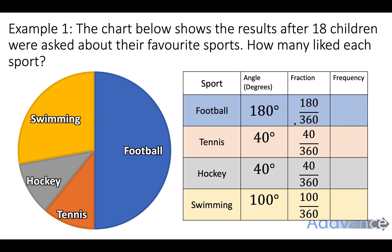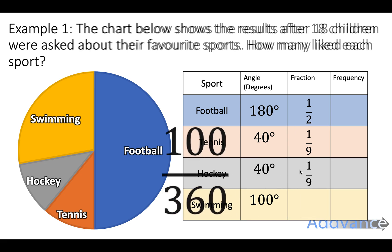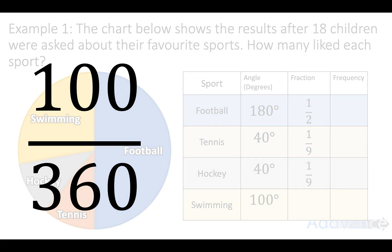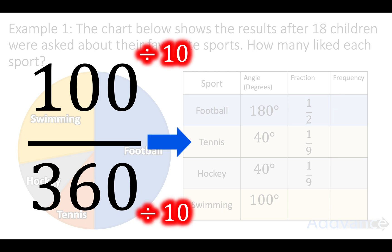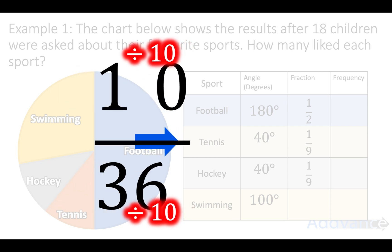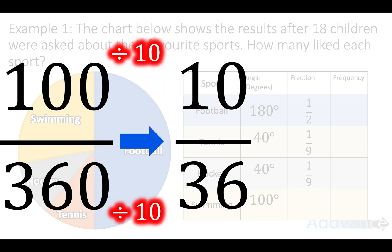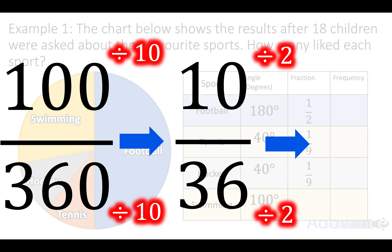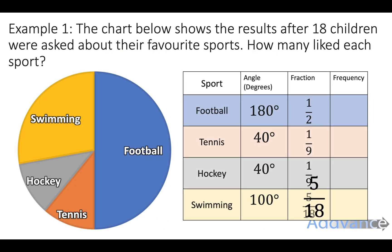And now we simplify those fractions, because mathematicians always simplify fractions to make it easy. 180 over 360 simplifies to one half. 40 over 360 simplifies to one ninth. Again, one ninth. So 100 over 360 - we simplify by dividing the top and the bottom by the same number. Divide by 10, divide by 10, you get 10 out of 36. Then divide by 2, divide by 2, you get 5 over 18. That's how we simplify fractions - divide the top and the bottom by the same number as many times as you can.